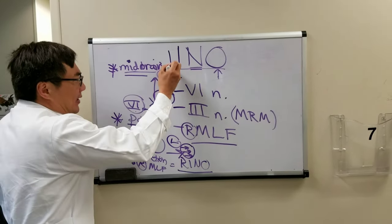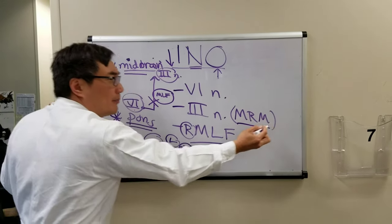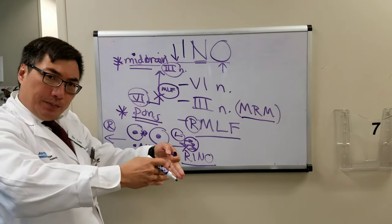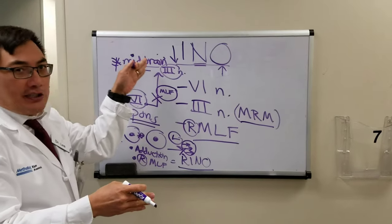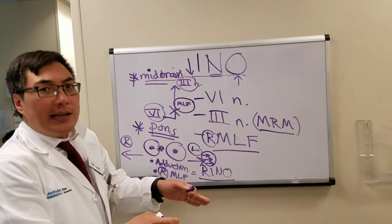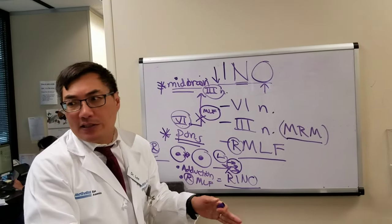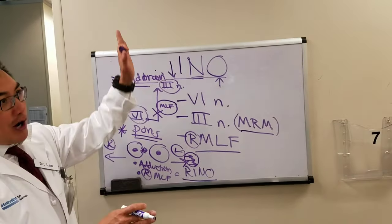We can stimulate the third nerve nucleus, and in this case the medial rectus muscle, to converge by having the convergence center, the near center, talk directly to the third nerve. That convergence center lives somewhere in the thalamomesencephalic junction, so it is way rostral.